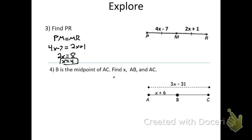Now that I know X equals 4 — after subtracting 2X from each side, adding 7 to each side, and dividing by 2 — we can figure out PR. PM would be 4 times 4 minus 7, and MR would be 2 times 4 plus 1. Both have a length of 9, which confirms the algebra. PR, the entire segment, has a length of 18.